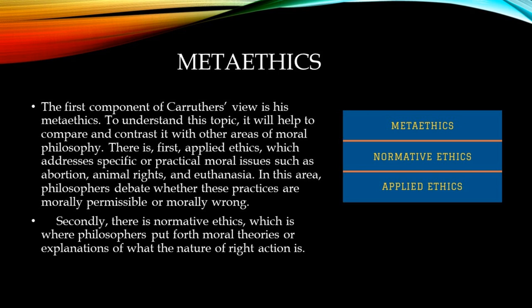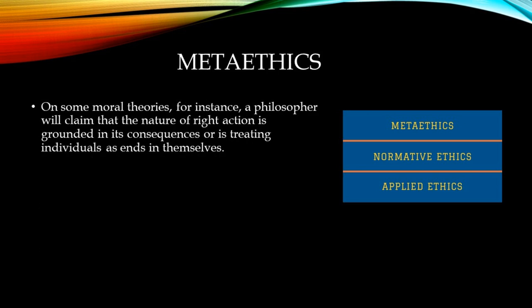To understand this topic, it will help to compare and contrast it with other areas of moral philosophy. There is, first, applied ethics, which addresses specific or practical moral issues such as abortion, animal rights, and euthanasia. In this area, philosophers debate whether these practices are morally permissible or morally wrong. Secondly, there is normative ethics, which is where philosophers put forth moral theories or explanations of what the nature of right action is. On some moral theories, a philosopher will claim that the nature of right action is grounded in its consequences, or is treating individuals as ends in themselves.